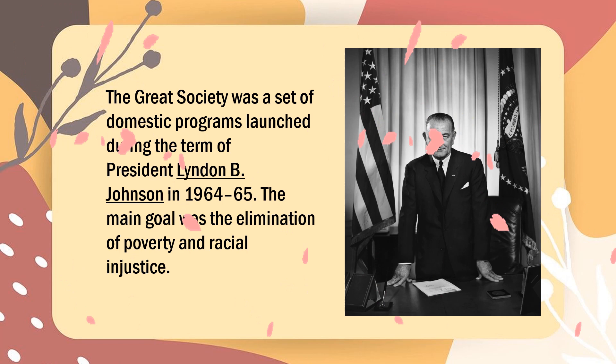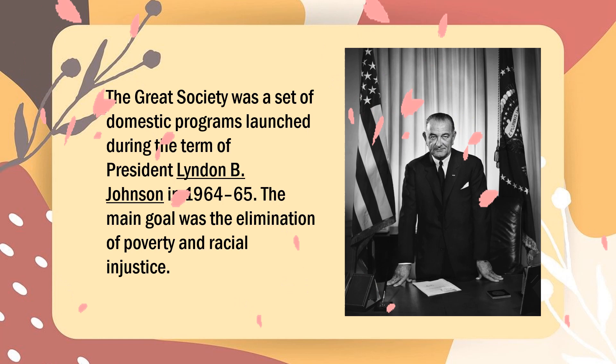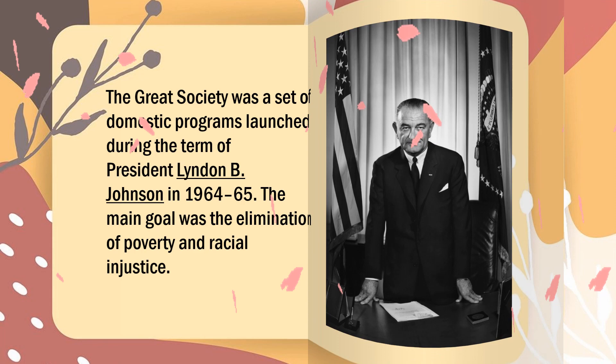The Great Society was a set of domestic programs launched during the term of President Lyndon B. Johnson in 1964-65. The main goal was the elimination of poverty and racial injustice. During this period, new major spending programs were launched that addressed education, medical care, urban problems, rural poverty, and transportation.